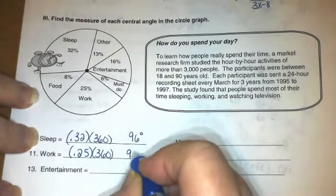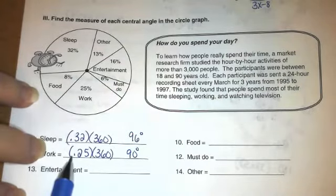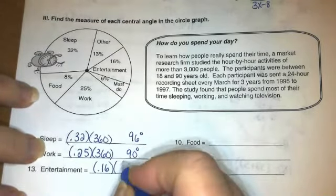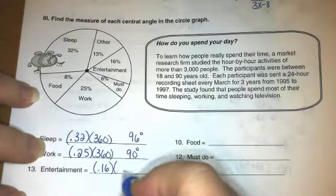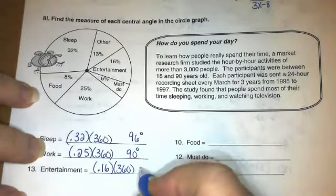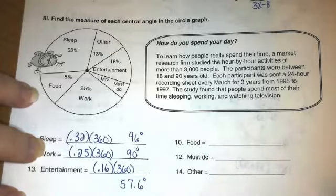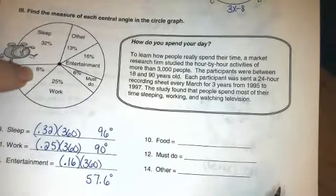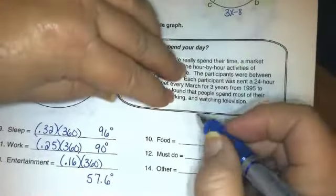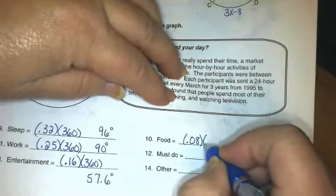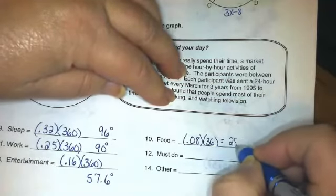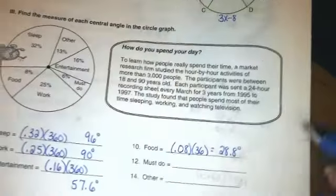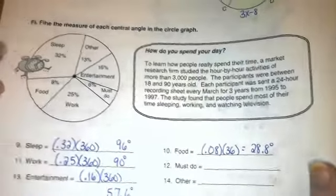So just remember your percentages, move your decimal place twice because it's over a hundred. Entertainment was 16 percent, so 0.16 times 360 gave me 57.6 degrees. Food is 8 percent. Just a reminder, don't put 0.8, it's 0.08 times 360, and that'll give you 28.8 degrees. And I can let you finish those.